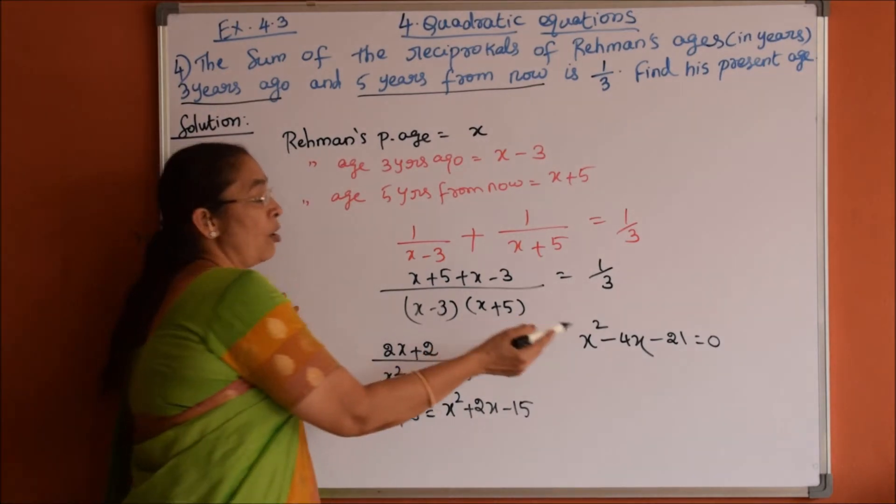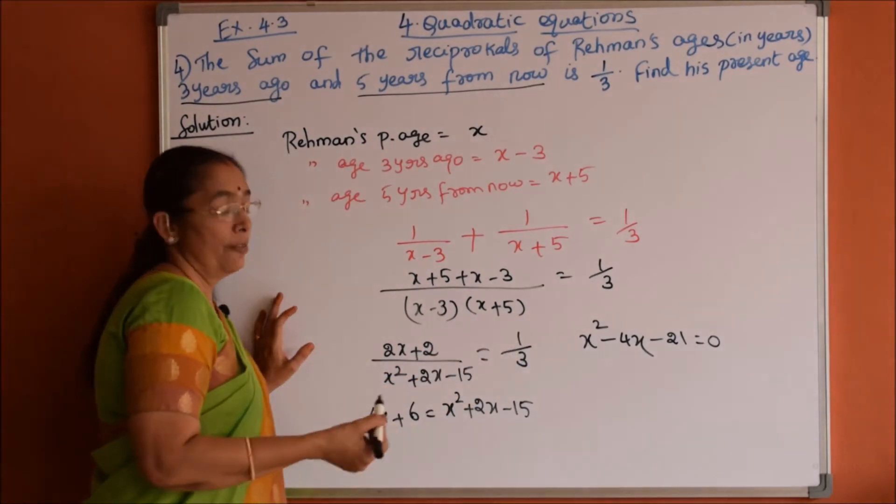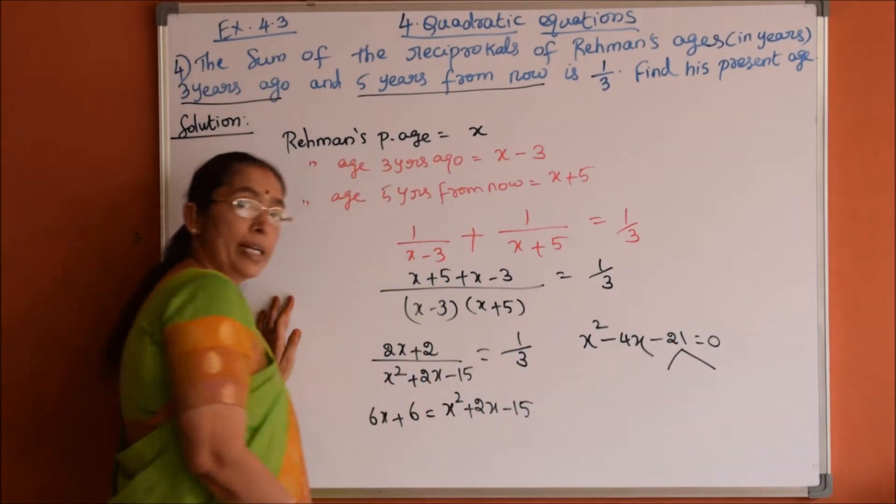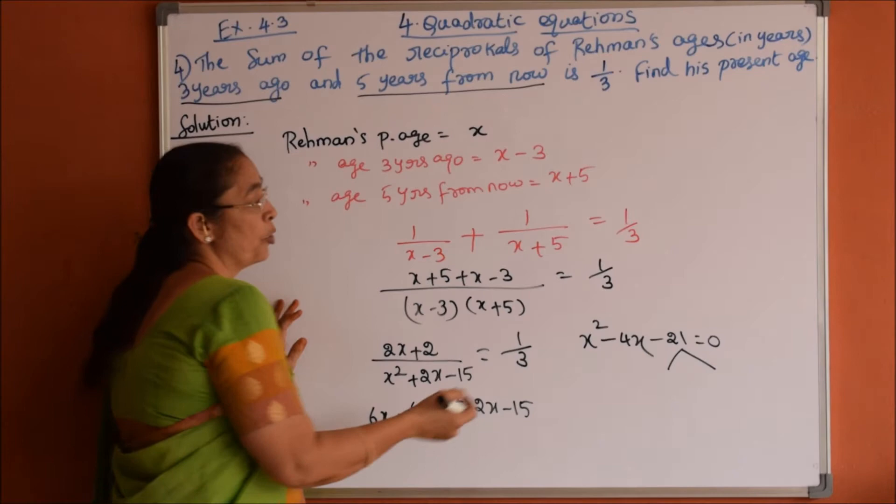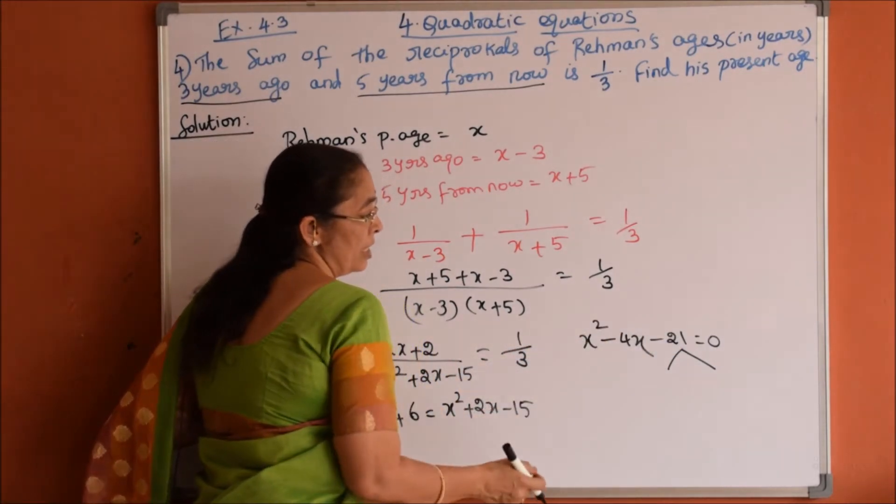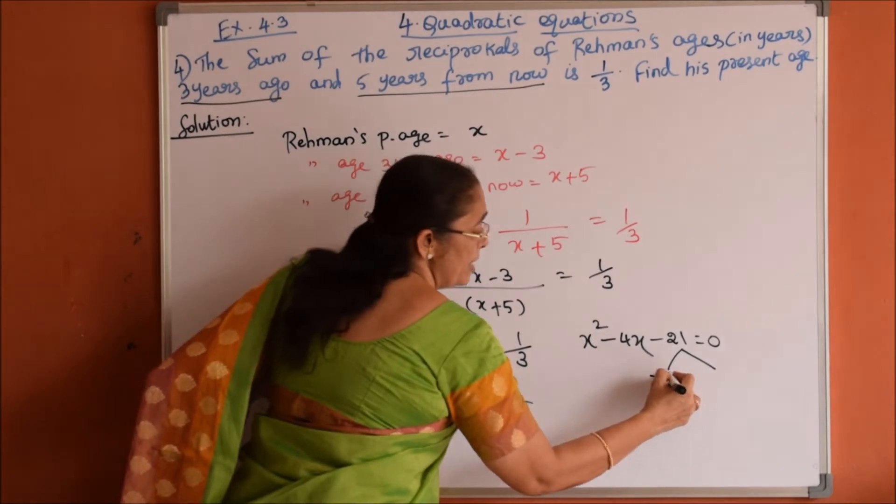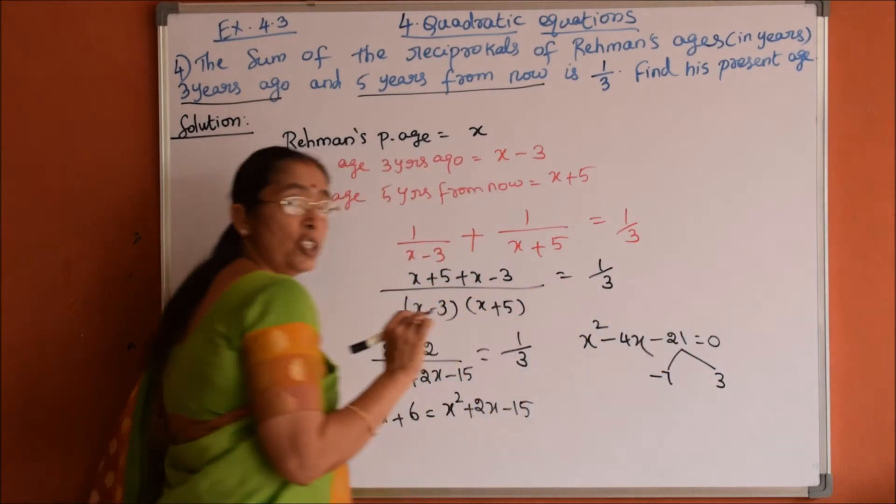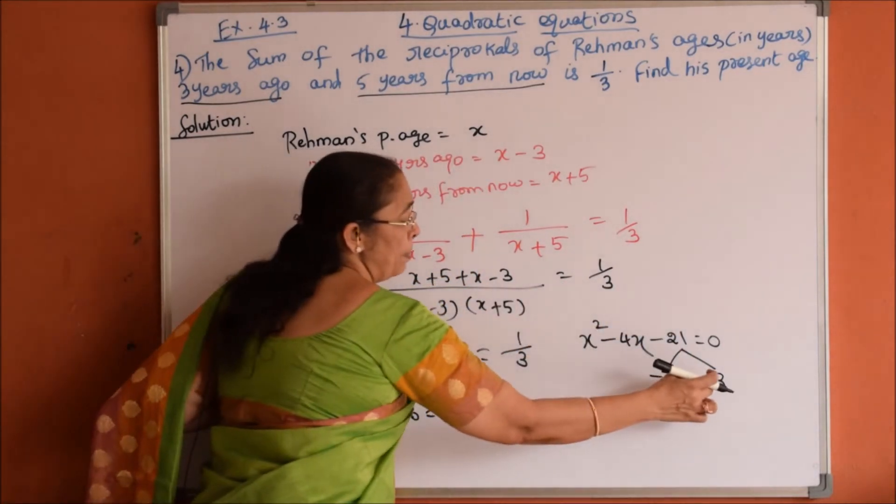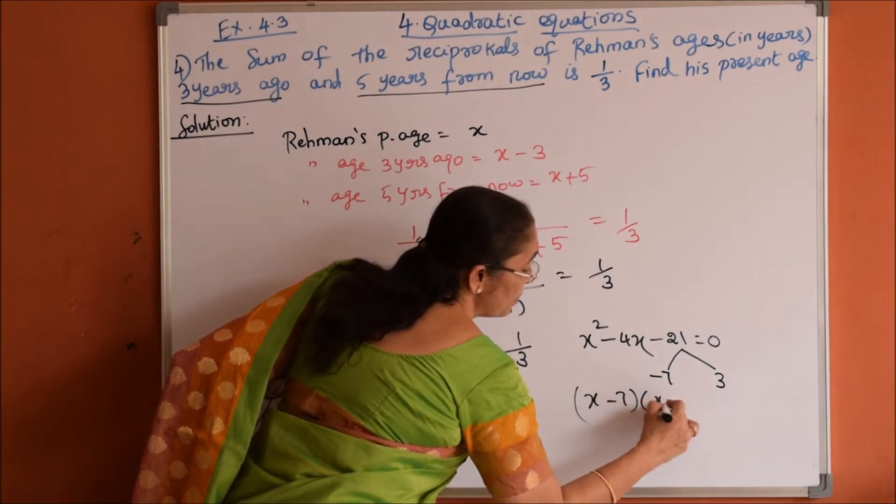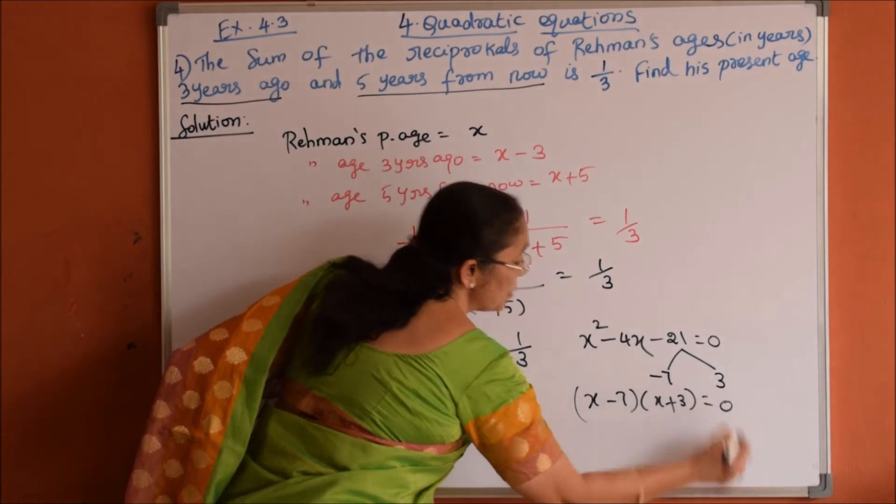Now let me solve this quadratic equation by factorization method. We can easily find the factors for 21 to get the sum as 4, so it is minus 21 here. So 7, 3 times 7 is 21, minus 7 into plus 3 is minus 21, minus 7 plus 3 is minus 4. So x minus 7 times x plus 3 is equal to 0.